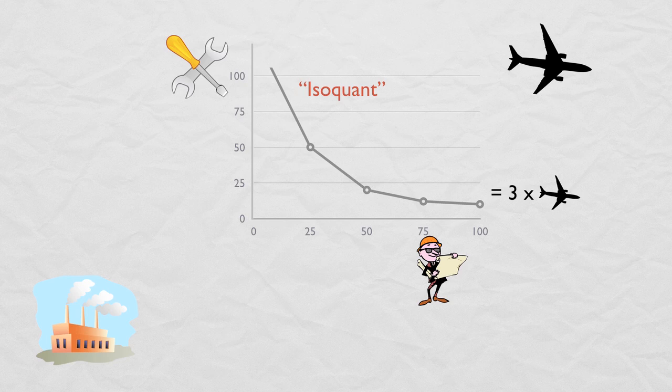Now let's say capital costs $10 per unit and labor costs $20 per unit, and say our firm is going to spend $1,000 on production. The firm can buy at most 100 units of capital and 50 units of labor. We can graph these two points and connect them with a line to show every combination of capital and labor that can be purchased for $1,000.